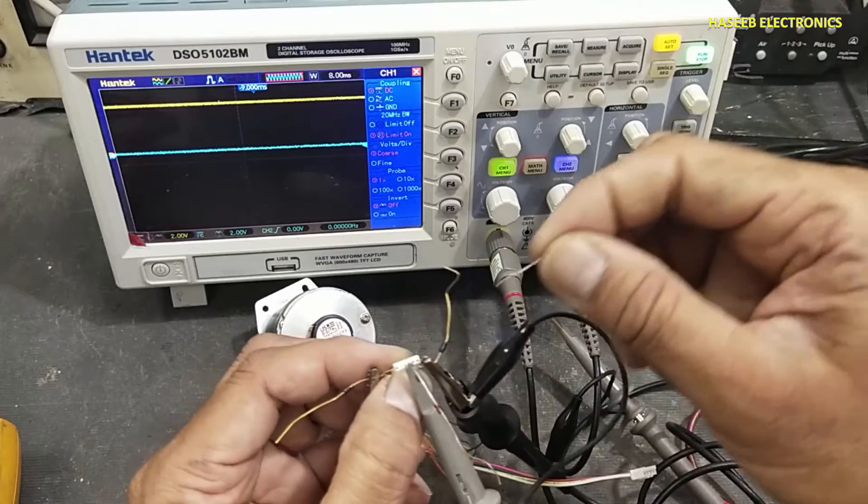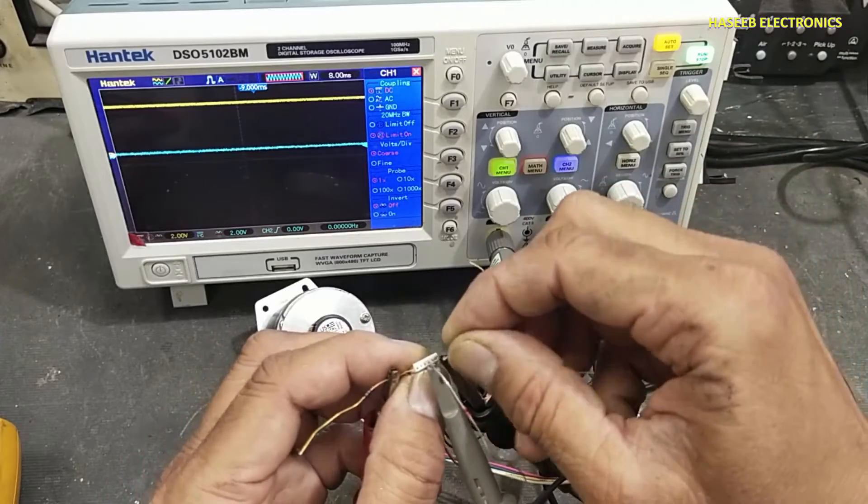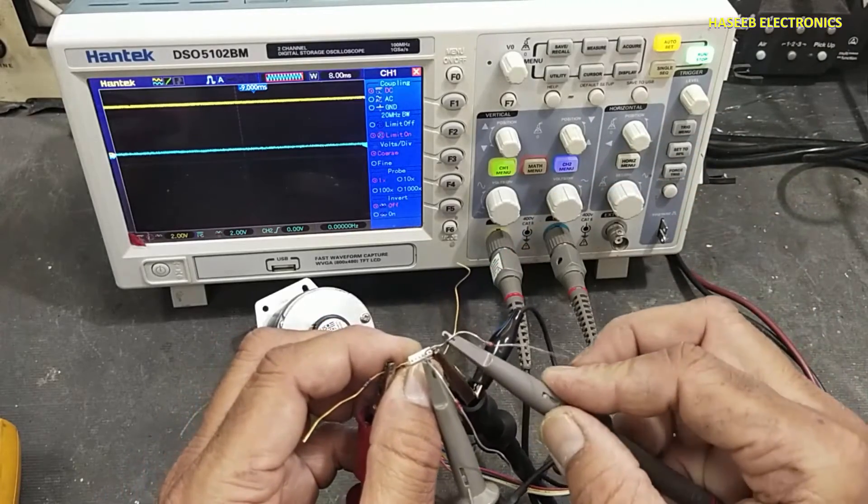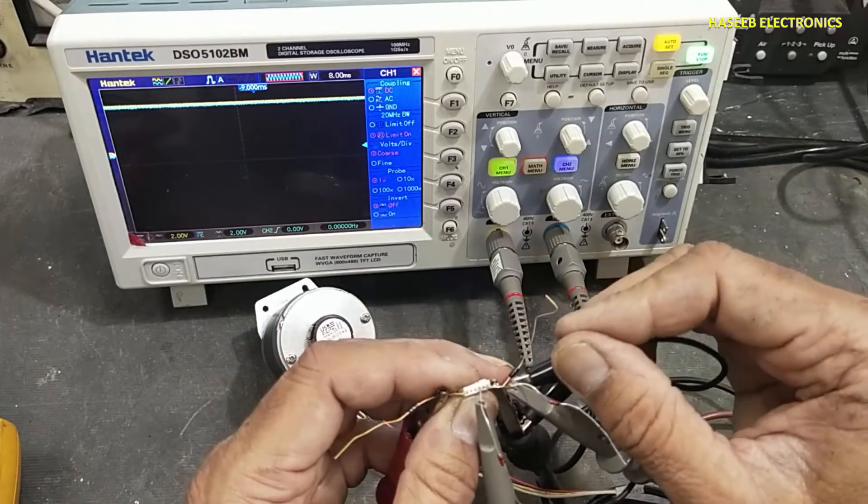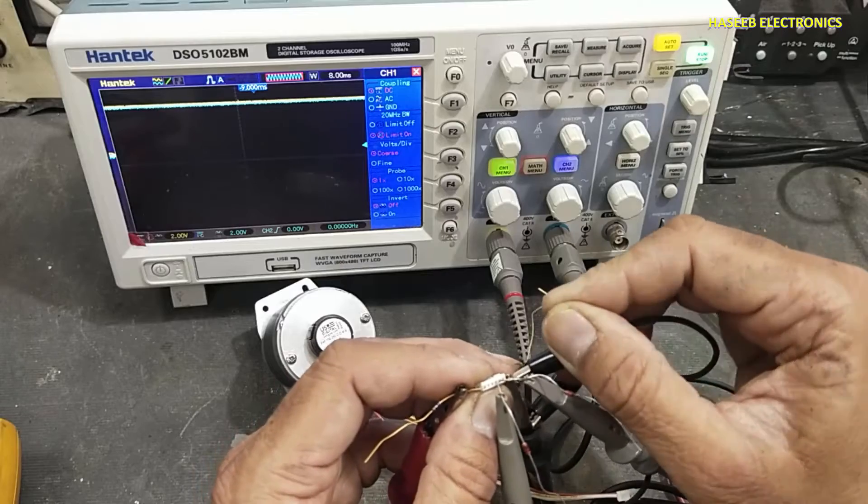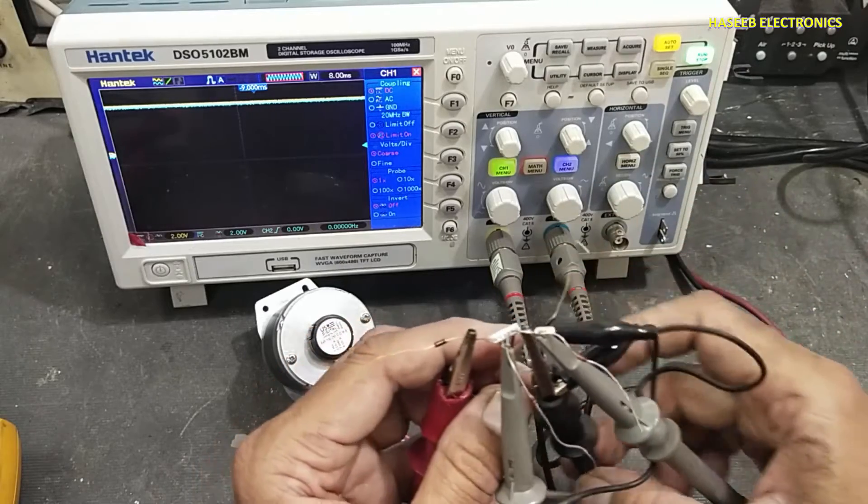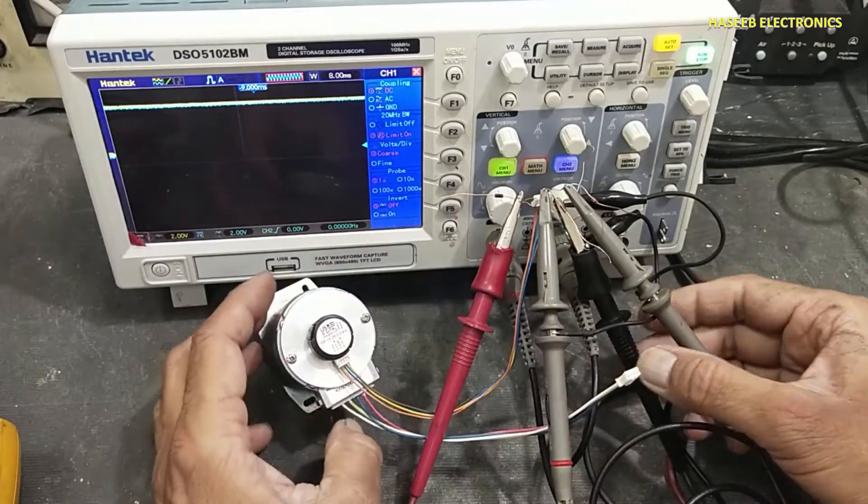Channel B output we will take from yellow wire, and we will make common with the power supply common. Oscilloscope common with power supply common. So now connections are ready.